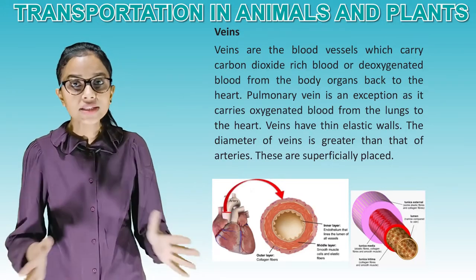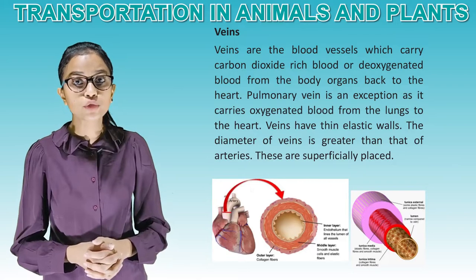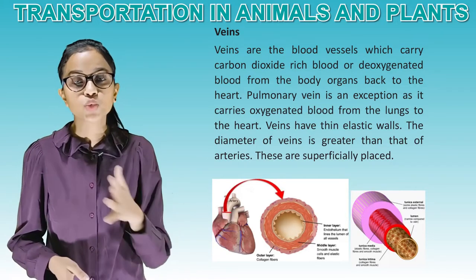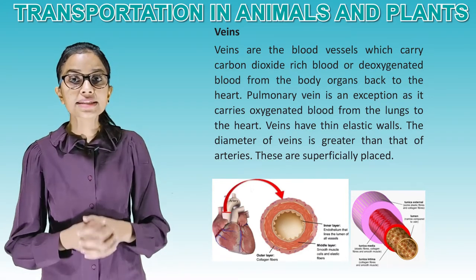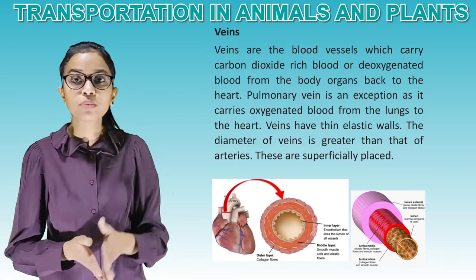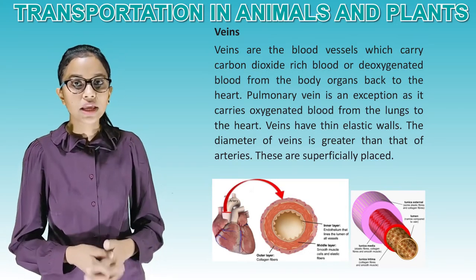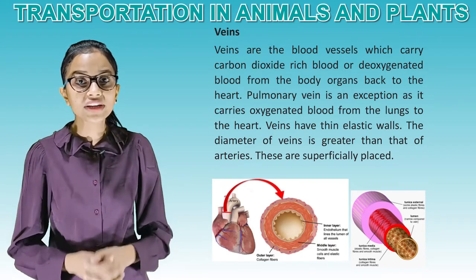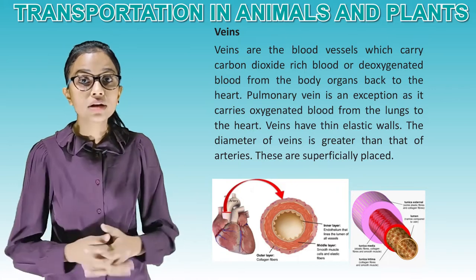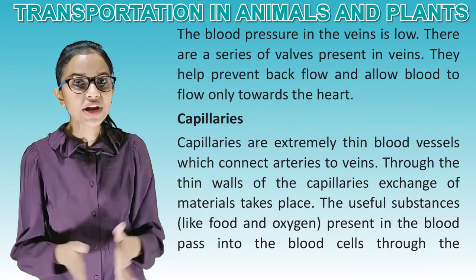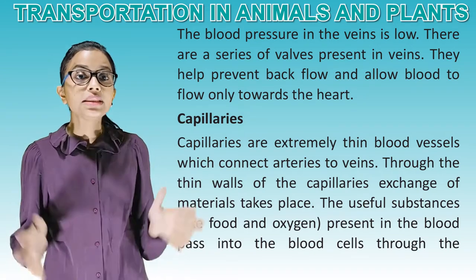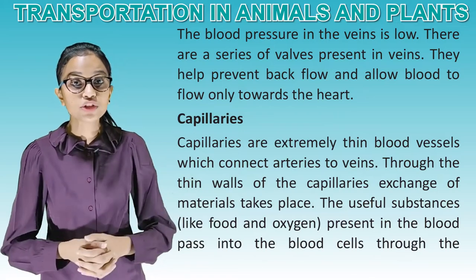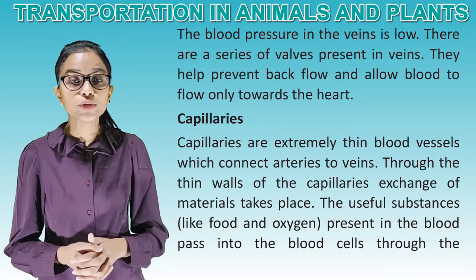Veins are the blood vessels which carry carbon dioxide-rich blood, or deoxygenated blood, from the body organs back to the heart. Pulmonary veins are an exception as they carry oxygenated blood from the lungs to the heart. Veins have thin elastic walls. The diameter of a vein is greater than that of arteries. These are superficially placed and the blood pressure in veins is low. There are a series of valves present in veins which help prevent backflow and allow blood to flow only towards the heart.